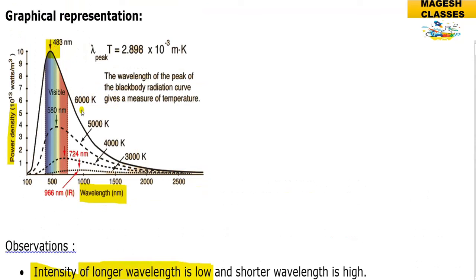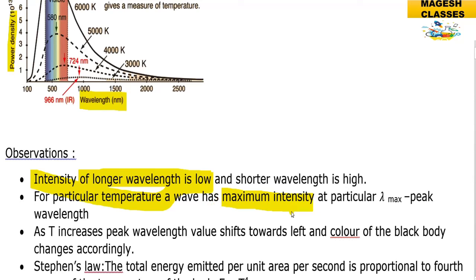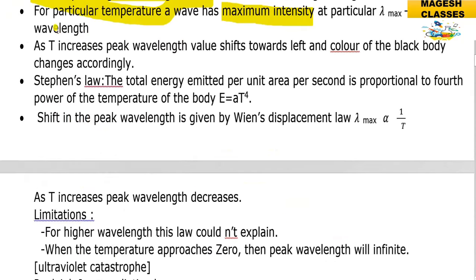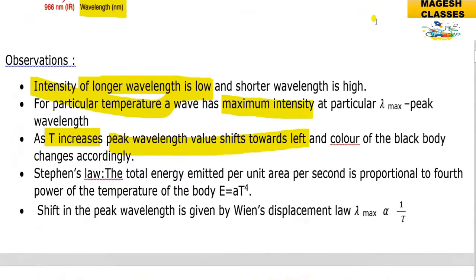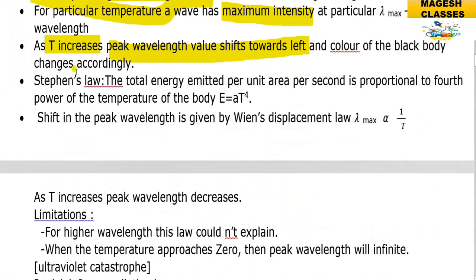For a temperature of 6000 K, the peak wavelength lambda-max falls around 500 nm. For a particular temperature we have maximum intensity at a particular lambda-max, called the peak wavelength. As the temperature increases, the peak wavelength value shifts towards the left — that is, toward shorter wavelengths — and the color of the black body changes accordingly.